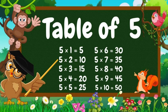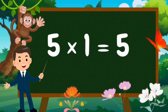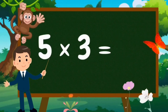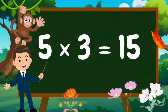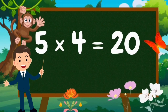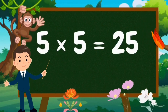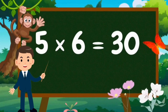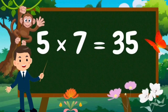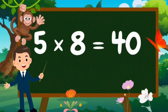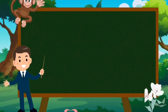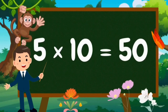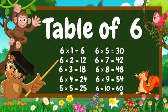Table of Five. Five ones are five. Five twos are ten. Five threes are fifteen. Five fours are twenty. Five fives are twenty-five. Five sixes are thirty. Five sevens are thirty-five. Five eights are forty. Five nines are forty-five. Five tens are fifty.